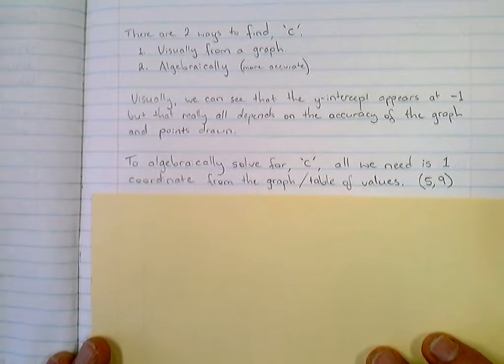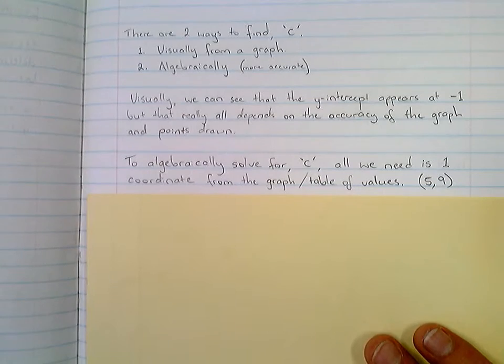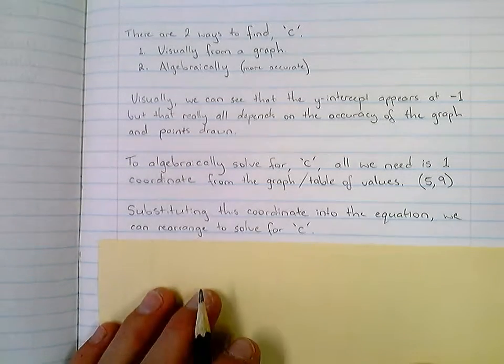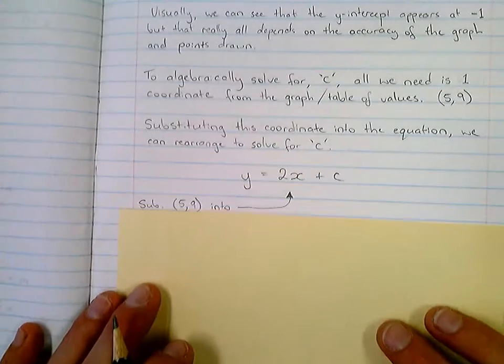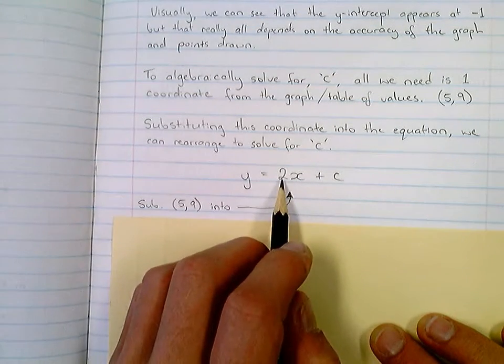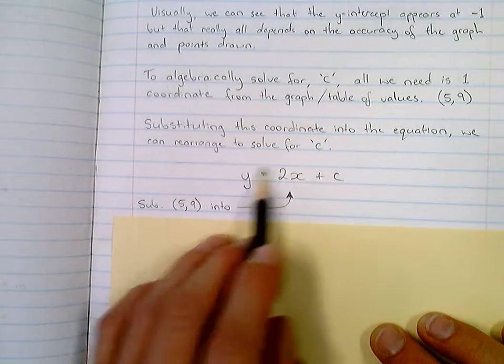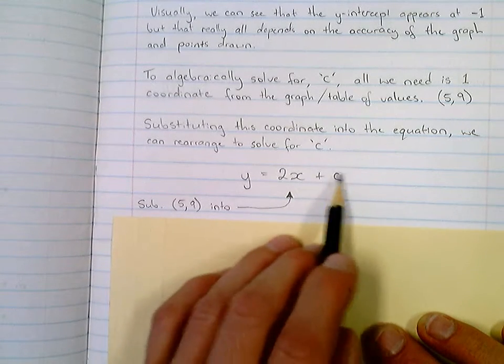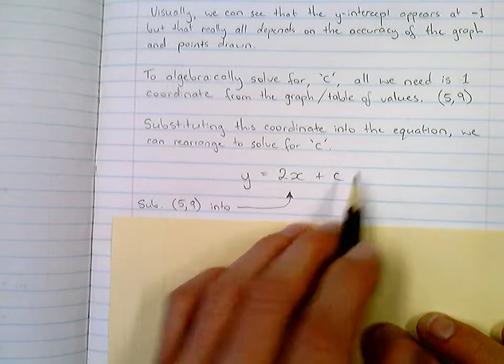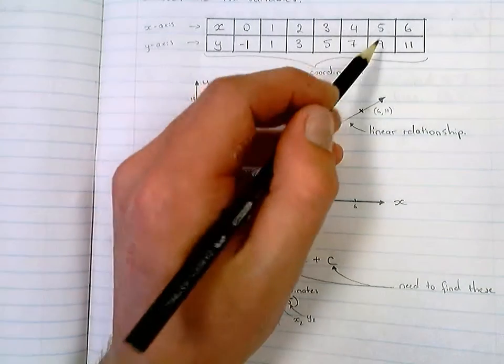So to algebraically solve for c, all we need is one coordinate from the graph or table of values, and this is the coordinate in which I chose. So substituting this coordinate into the equation, we can then rearrange to solve for c. Now if this seems confusing, that's okay, because it might become a bit more clearer with regards to this here. This is the equation which I found on the previous page, once I had my m value. I'm looking for c, but to find c, I obviously need to know x and y. I can't solve this unless I have all the variables known apart from the one which I'm looking for being c. So if I have an x and y value, then I can substitute in for y and x or x and y and solve for this c. And that's what I suggest that we do up here with regards to grabbing one of the coordinates from the table of values. And the one in which I chose was simply this 5 and 9. It could have been any of them. It would work with any, but I just chose this one because it looked random.